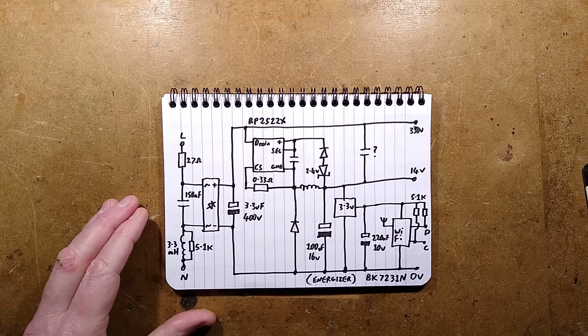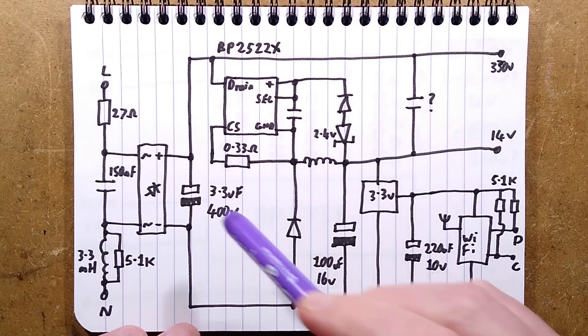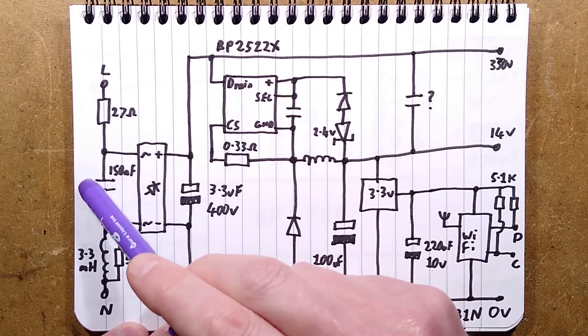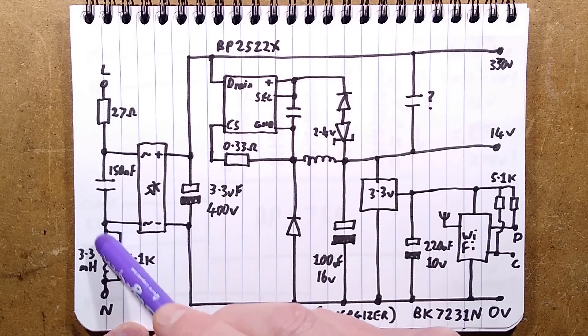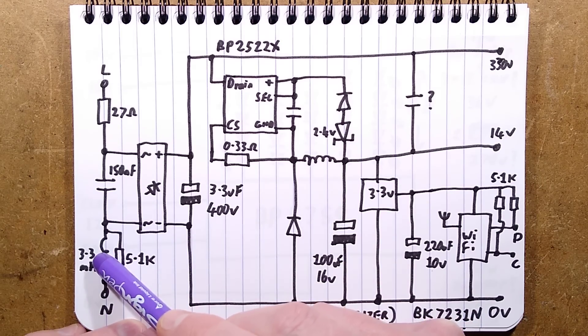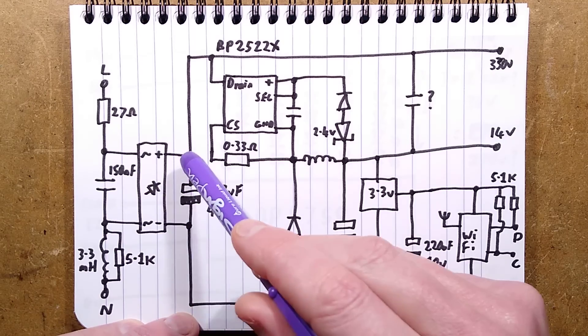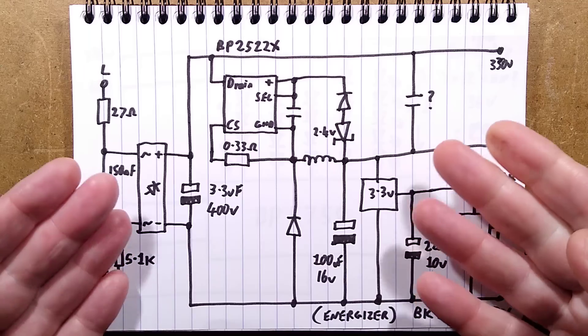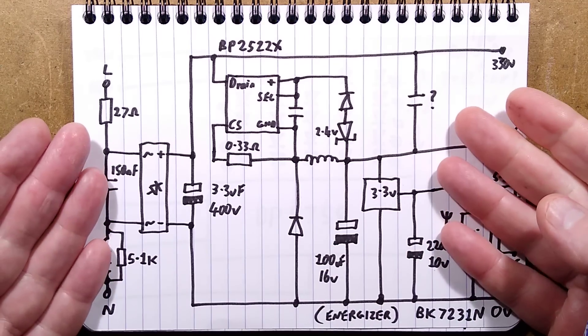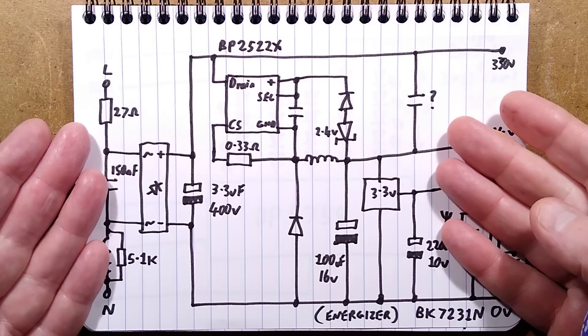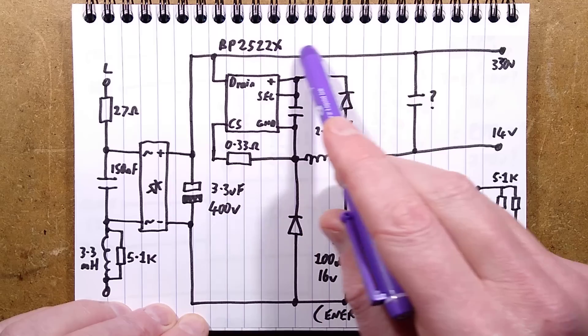The incoming supply comes in here. There's a 27 ohm resistor, the filtering capacitor, and a little inductor with a 5.1k resistor across it to quench resonance presumably. We've got a bridge rectifier, the death beam capacitor - I call it that because a conspiracist claimed that 400 volt capacitors in streetlight power supplies are to power the 5G death beams.